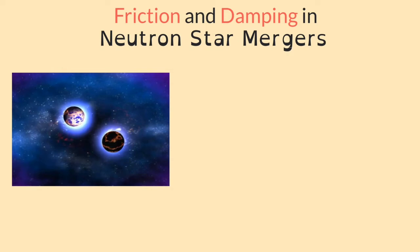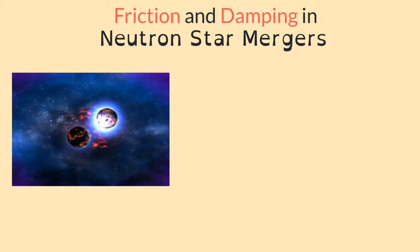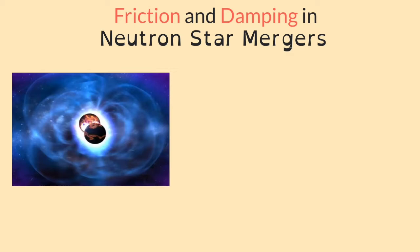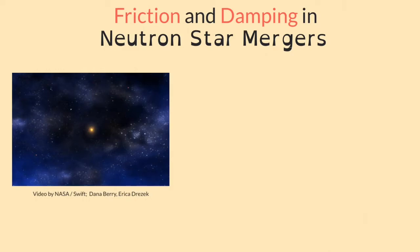Neutron star mergers are kind of cosmic car crashes in which two ultra-dense collapsed stars, neutron stars, collide and merge. In our whole galaxy this only happens a few times in every million years, but there are a lot of scientists who are very excited about them.